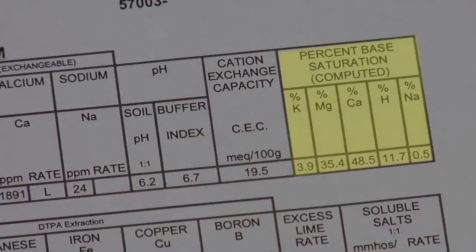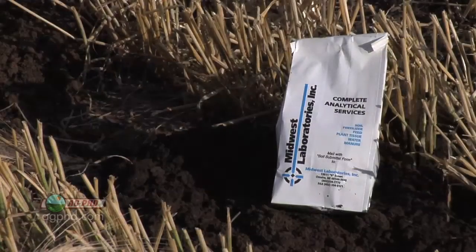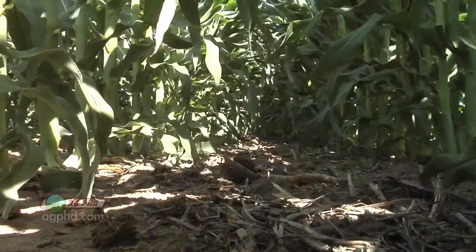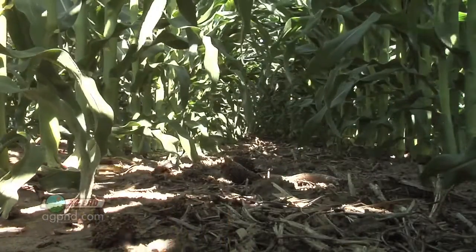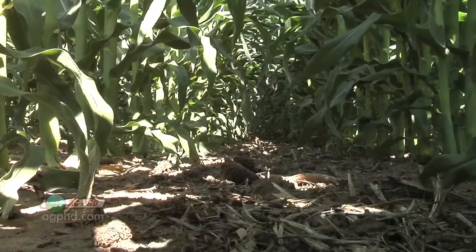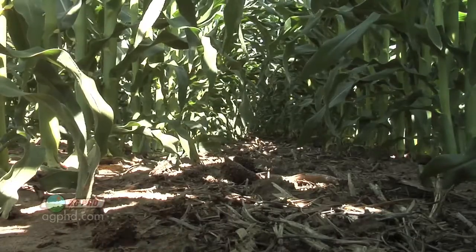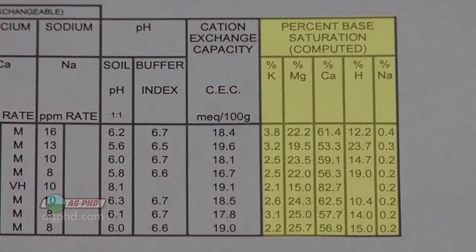One of the most important things you need to get on a soil test is base saturation. We'll talk about why today and help you understand what the components of base saturation are. Base saturation really lets you know what's going on in your soil in terms of a balance of nutrients. If you're way overloaded on one or way short on another, it lets you focus in on certain problems on your farm.